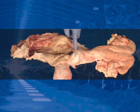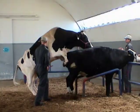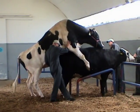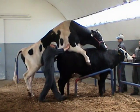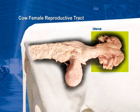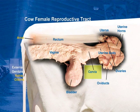connects the vulva with the cervix. At natural service, it receives the penis of the male. The uterus, also known as the womb, offers shelter to the fetus until the calving moment.